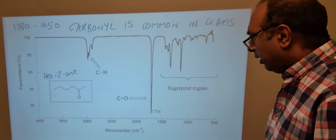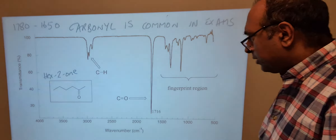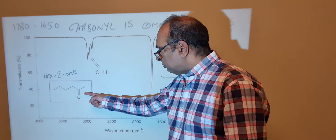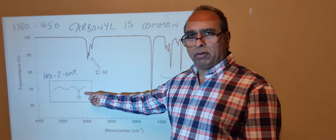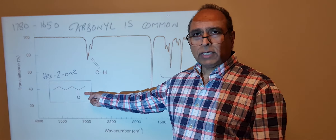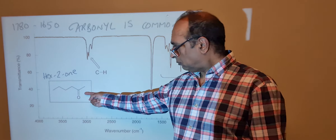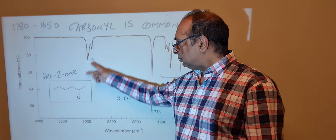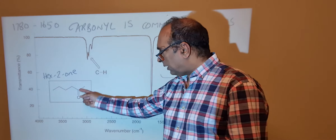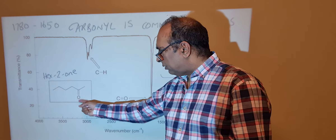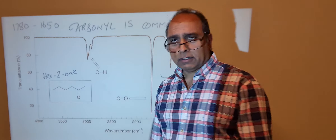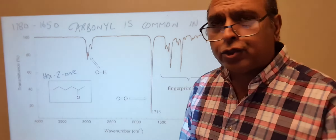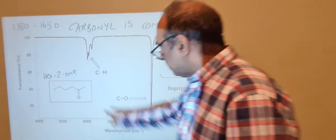Now let's look at something different: hexan-2-one, a ketone. It's a six-carbon chain with the carbonyl at the 2 position.